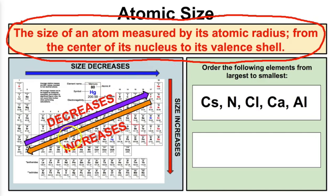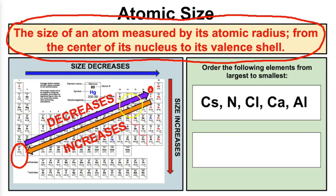So what does that mean? Atoms will have a tendency to get smaller as you move from left to right on the periodic table, and they will have a tendency to get bigger as you move from top to bottom. So what ends up happening is that your really big atoms are down in the bottom left corner of the periodic table, and your really small atoms are going to be in the top right corner.